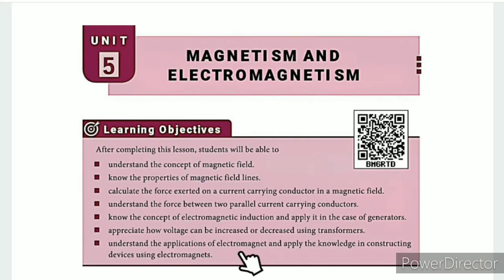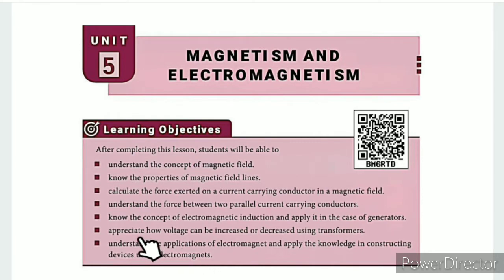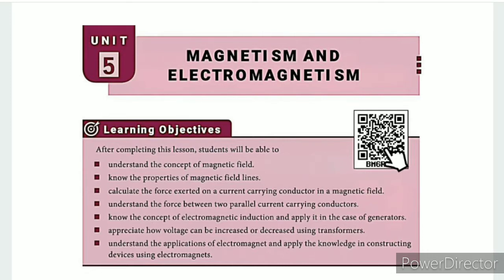The learning objectives also include knowing the concept of electromagnetic induction and applying it in the case of generators, appreciating how voltage can be increased or decreased using transformers, and understanding the applications of electromagnets. The QR code and ICT corner link are in the description box below. The ICT corner includes 6 activities and 3 videos that can be done on mobile — don't miss them.